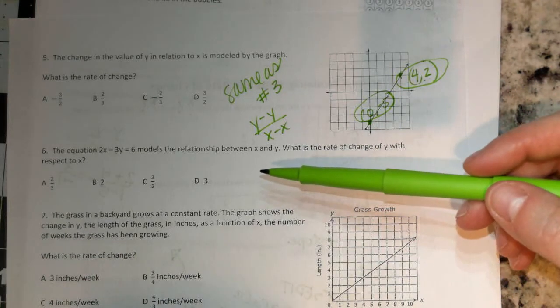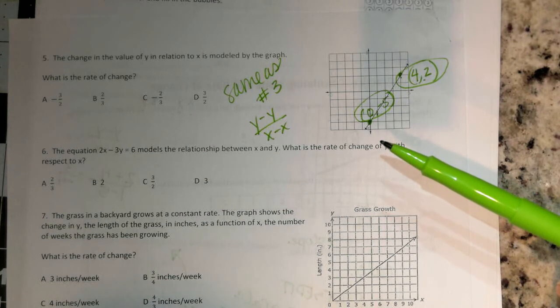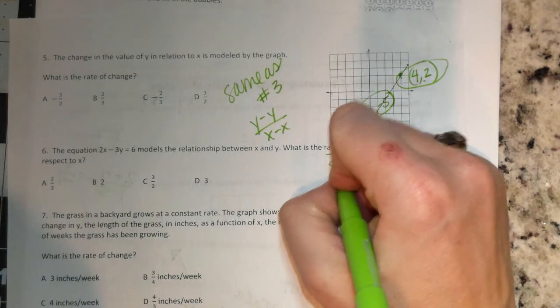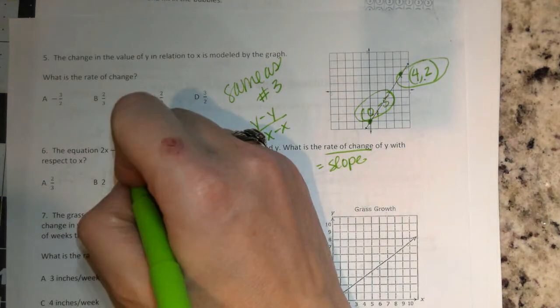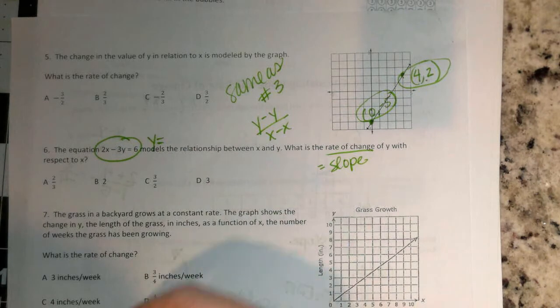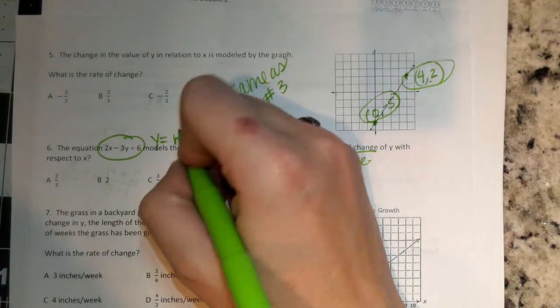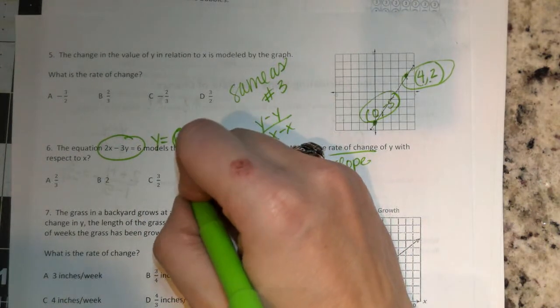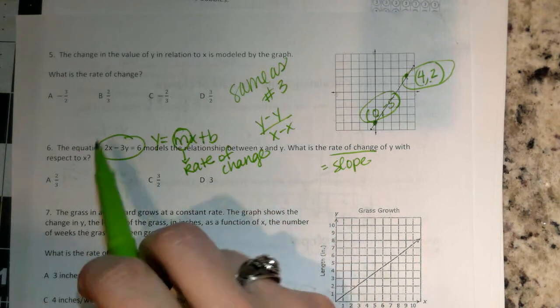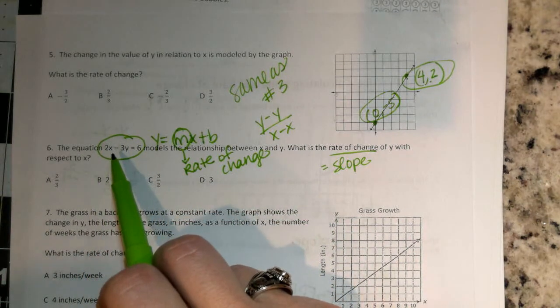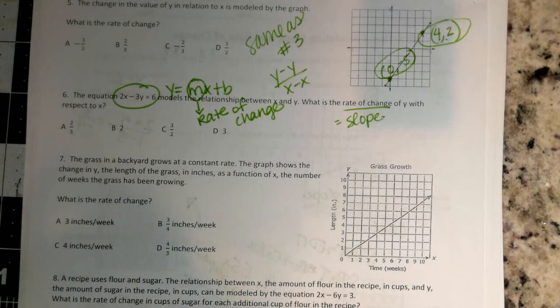Let's go to number 6. The equation 2X minus 3Y equals 6 models the relationship between X and Y. What is the rate of change of Y with respect to X? So rate of change is the same thing as slope. So all you need to do is put this in Y equals, get it equal to Y. And whatever comes before the X, that is your slope. That is your rate of change. So set this equal to Y. And whatever number is in front of the X, when you set it equal to Y, is going to be your rate of change. Number 7. Write those notes. You can go back and solve it.